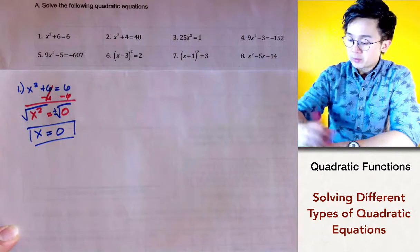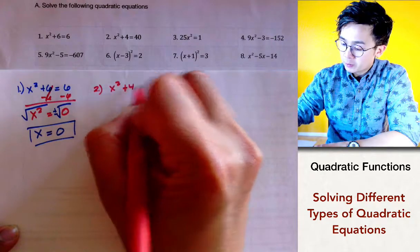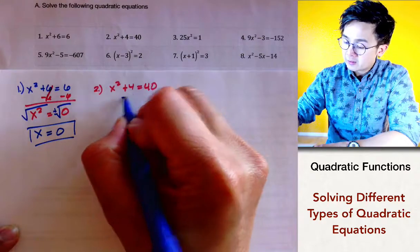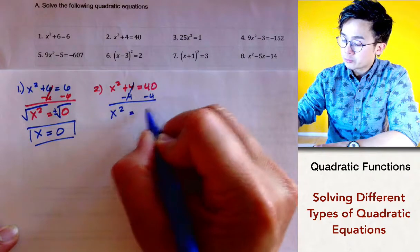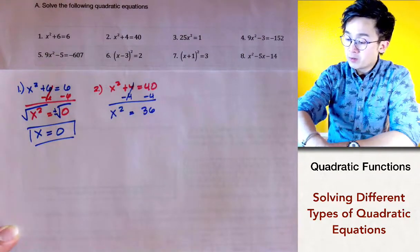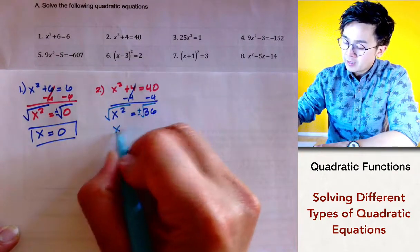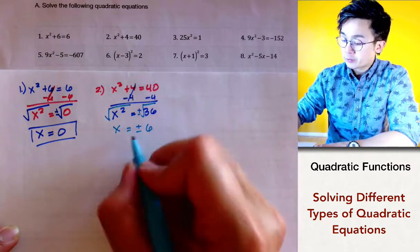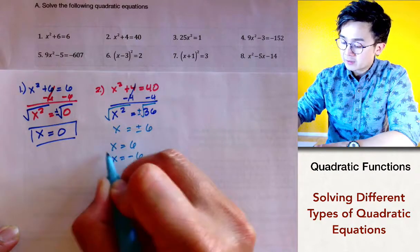For problem number two, we use the same technique. We have x squared plus 4 equal to 40, so we subtract 4 on both sides, leaving us with x squared equal to 36. Taking the square root of both sides gives us plus or minus 6, so the two solutions are x equal to 6 and x equal to negative 6.